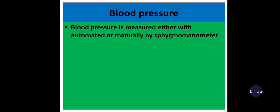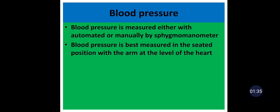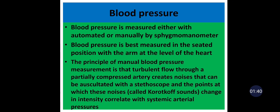After general appearance, we should take vital signs of the patient. The first one is blood pressure. Blood pressure is measured either with an automated device or manually by a sphygmomanometer. Blood pressure is best measured in the seated position with the arm at the level of the heart.